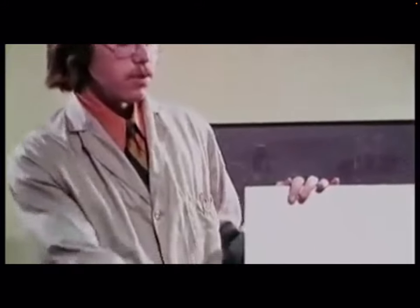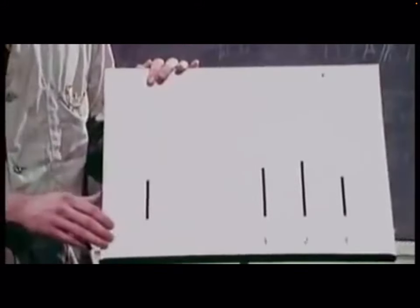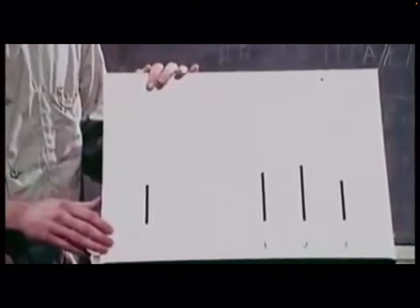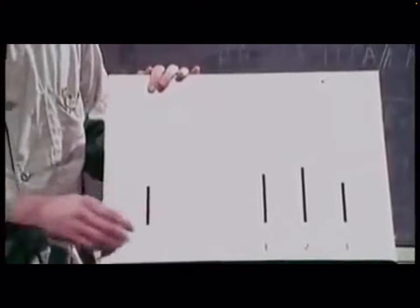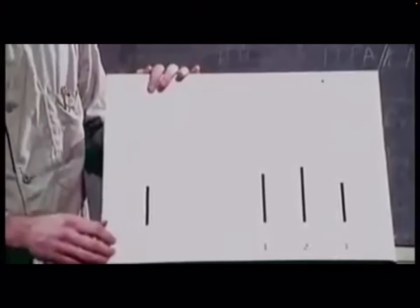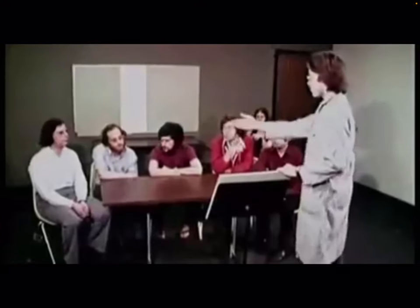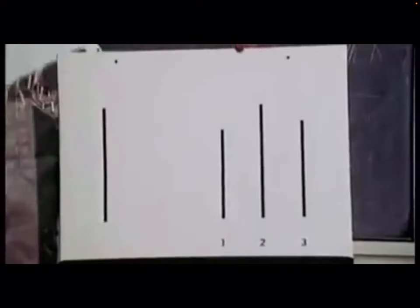The experiment you'll be taking part in today involves the perception of line length. Your task will be simply to look at the line here on the left and indicate which of the three lines on the right is equal to it in length. The actors have been told to match the wrong lines. The volunteer will be monitored to see if he gives the correct answer or if he goes along with the opinion of the group and gives the wrong answer. In the first test, the correct answer is two.